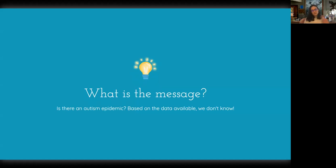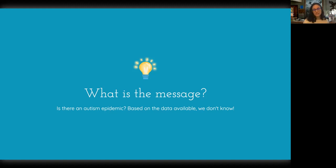The message he used this figure to drive home was: is there an autism epidemic? And based on the data available, we don't know. His point was that it might look like the prevalence of diagnoses is increasing, but it has to do with how many individuals might be accessing services. So we sought to figure out a better way to tell that message in a way that might be a little bit more intuitive for people.